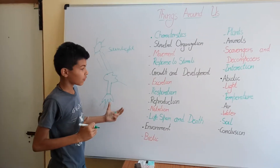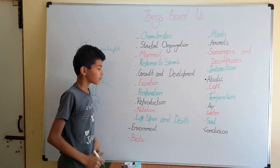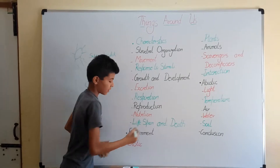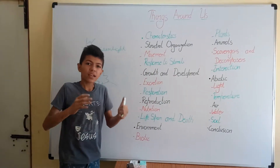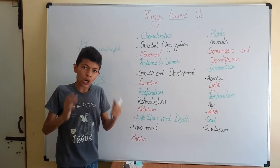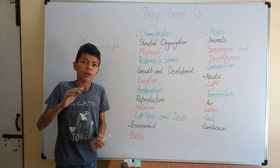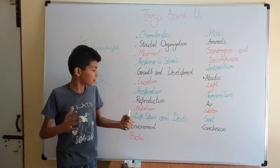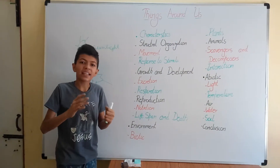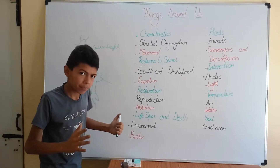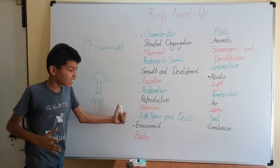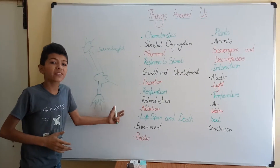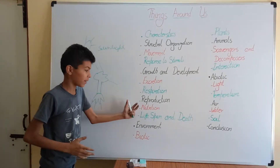Then we have life span. An organism is born, grows, respires, reproduces, and finally dies. This entire process is called a life cycle or life span.